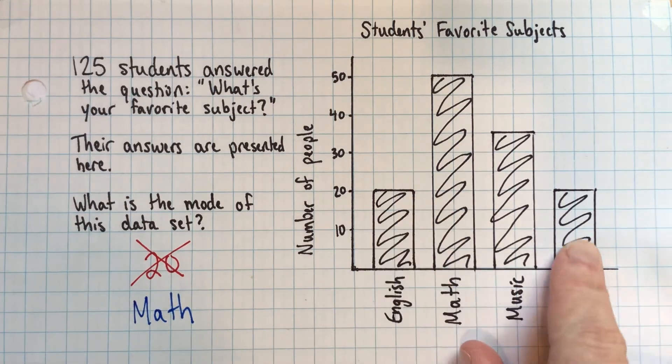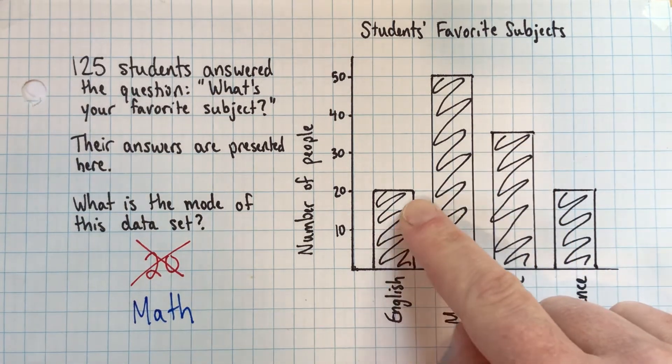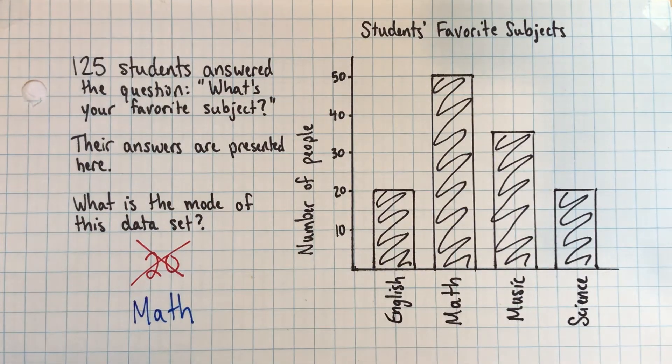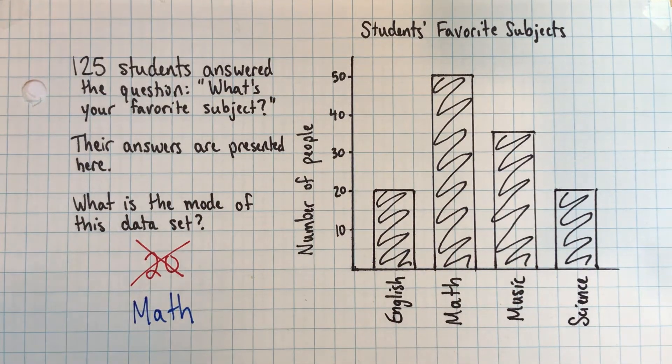So just be really clear and careful if you're finding the mean or median or mode of something where you're getting the data from a table or a chart instead of a list. Really think carefully about what it means.